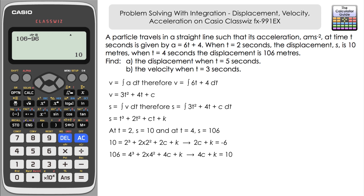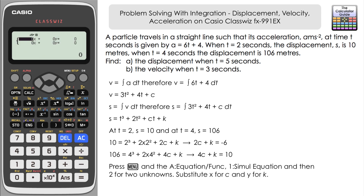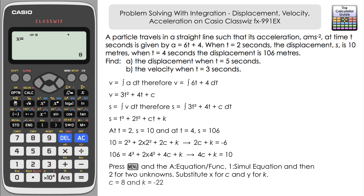Now we have our two linear simultaneous equations and we go to the simultaneous equation solver on the ClassWiz: Menu, then down to Equation, Function 1 for simultaneous equations, and select 2 unknowns. The calculator uses x and y, so x represents c and y represents k. Input the first equation: 2x + 1y = -6, and the second: 4x + 1y = 10. Press equals to confirm and we get x = 8, so c = 8. Pressing once more gives y = -22, so k = -22.